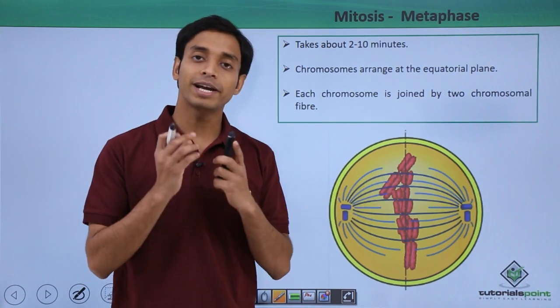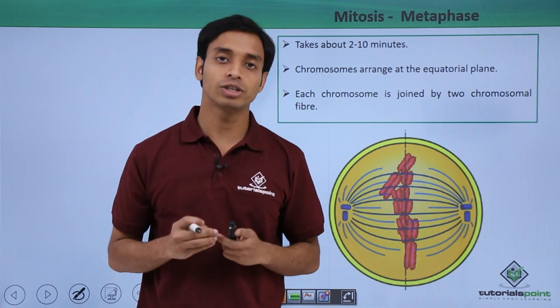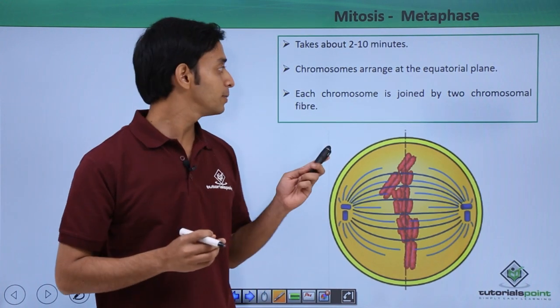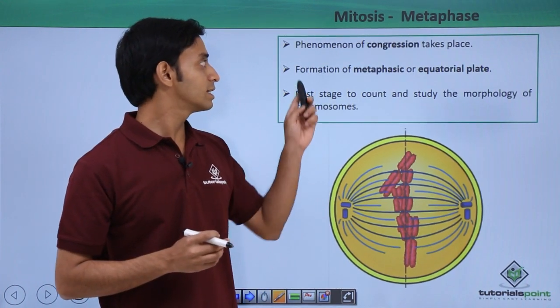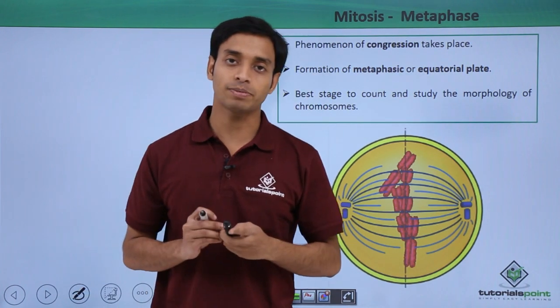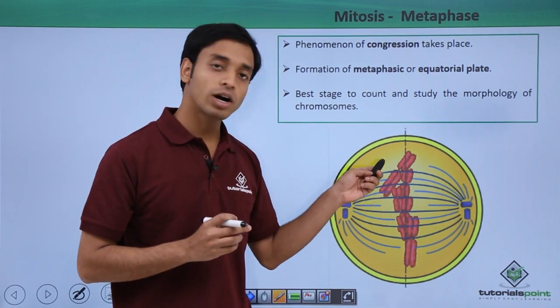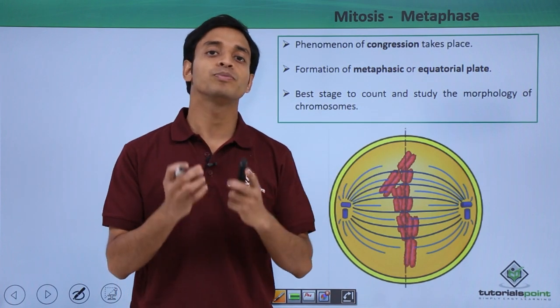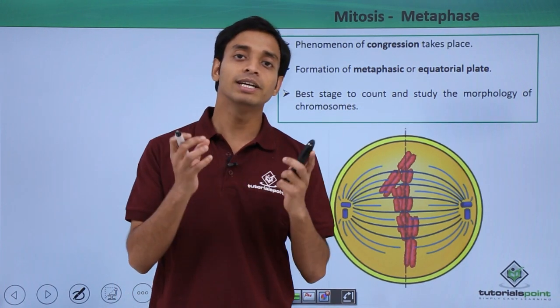From each of these poles the microtubules come and attach to the centromeres of the chromosomes. Now in this metaphase the phenomenon of congression takes place. After the attachment of the microtubules to the chromosomes, there is repeated pulling and pushing movement.